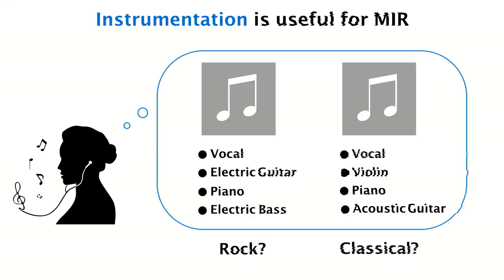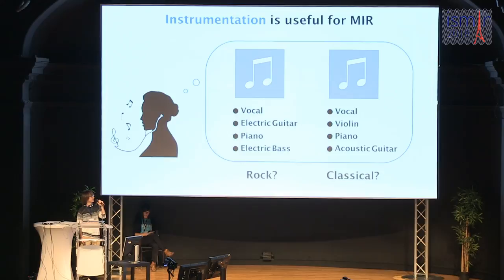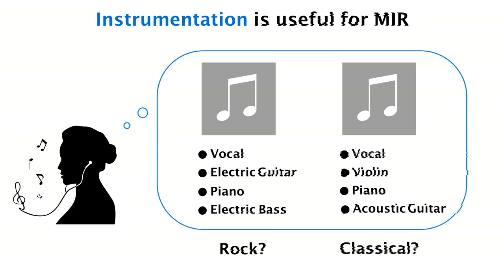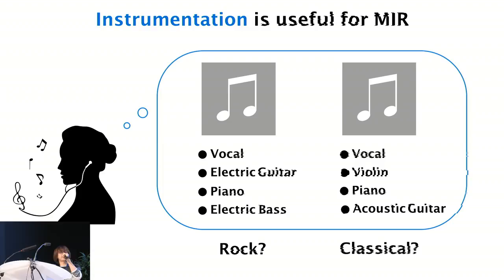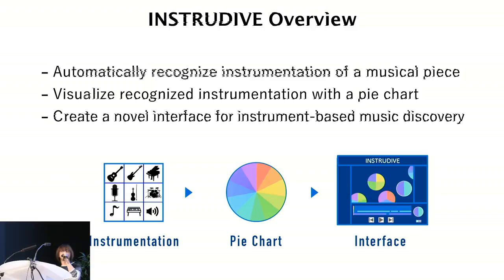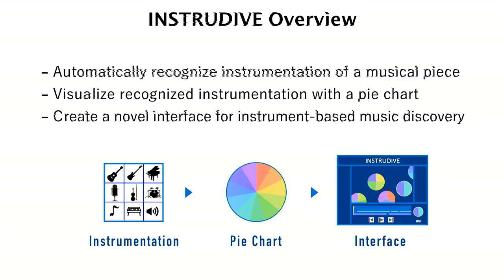When you want to find music, general categories are not enough — for example, if you want to find music with electric guitar and piano, specifying 'rock music' is ambiguous. Instrumentation is useful for specifying your preference. We proposed the InstruDive system to help people discover music based on instrumentation. The system automatically recognizes the instrumentation of a musical piece and visualizes it as multi-colored pie charts, where the color corresponds to each instrument, enabling instrument-based music discovery.